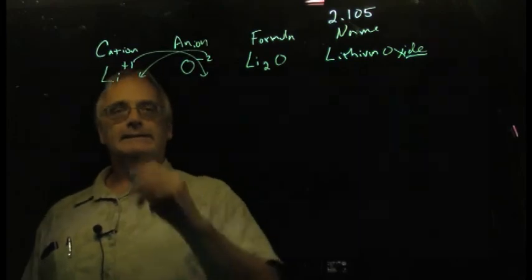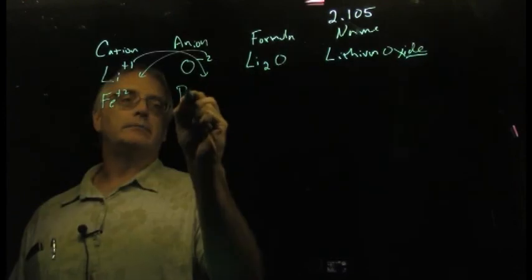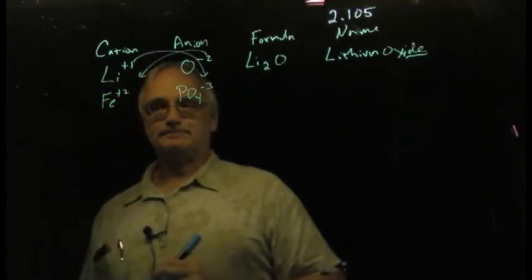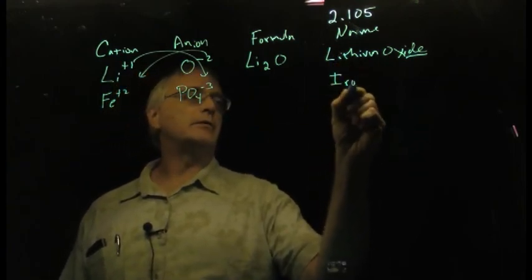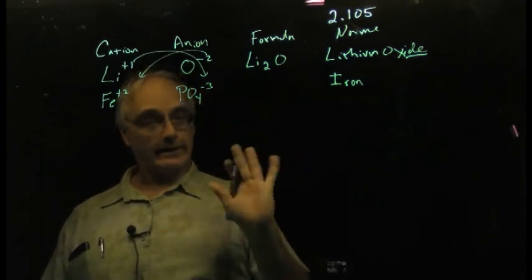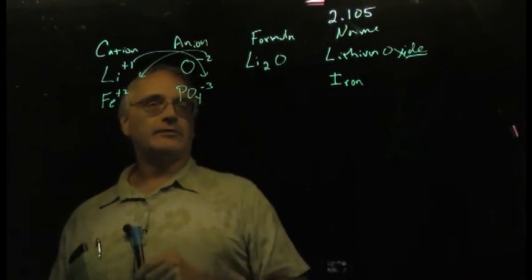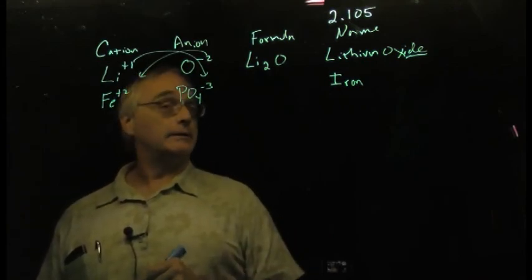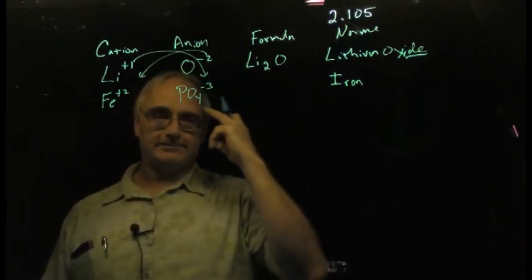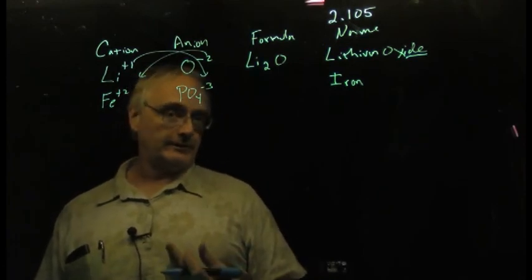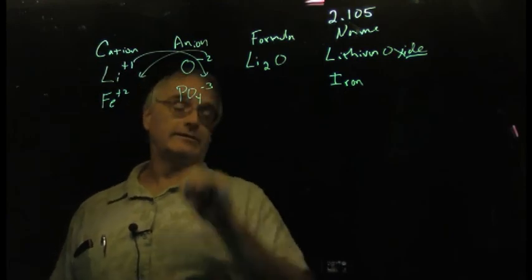The second row of this table. This time they give us two of these. They tell us Fe plus two and PO4 minus three. Now Fe, a symbol for iron. So the name is going to be iron something or other. I'm going to put that in there because I know that one already.